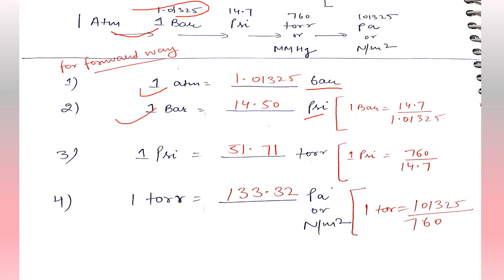Now converting 1 bar into psi. We know the value of psi is 14.7. Going in the forward direction, we divide: 14.7 divided by 1.01325.